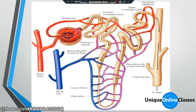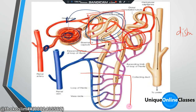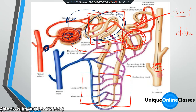Looking at the diagram, we have the glomerulus and the Bowman's capsule. First of all, we have glomerular filtration. Then we have tubular absorption — tubular absorption is also called selective absorption. We also have tubular secretion, and a loop of Henle for absorption of water.